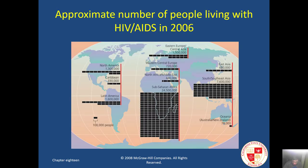This map shows the disproportionate distribution of HIV cases throughout the world. As we see in the sub-Saharan continents of Africa, it is still a very widespread disease in epidemic proportion, and in Southeast Asia as well. It has become a much more managed situation in North America and Europe, specifically Western Europe.